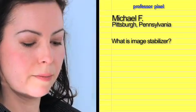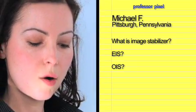What is Image Stabilizer? EIS, OIS, and what is better and why? Well, Michael, Image Stabilization is your HD camcorder's way of making your shaky shots look smoother.